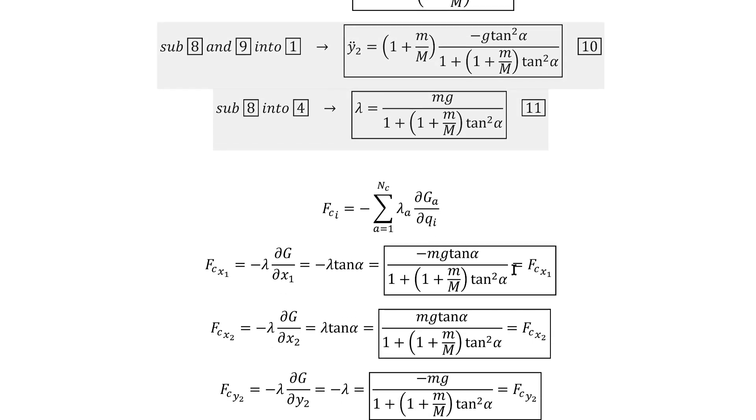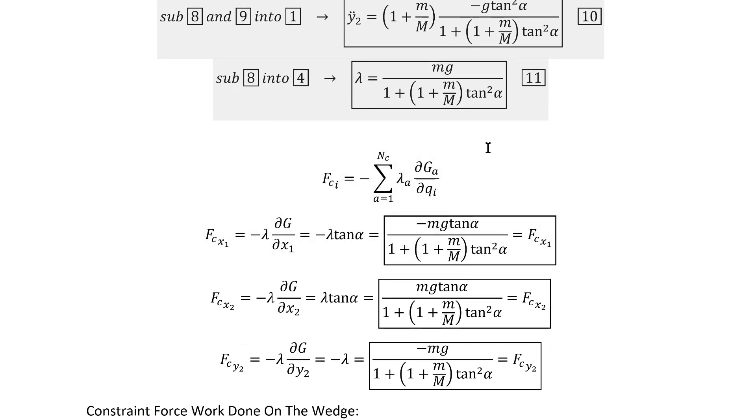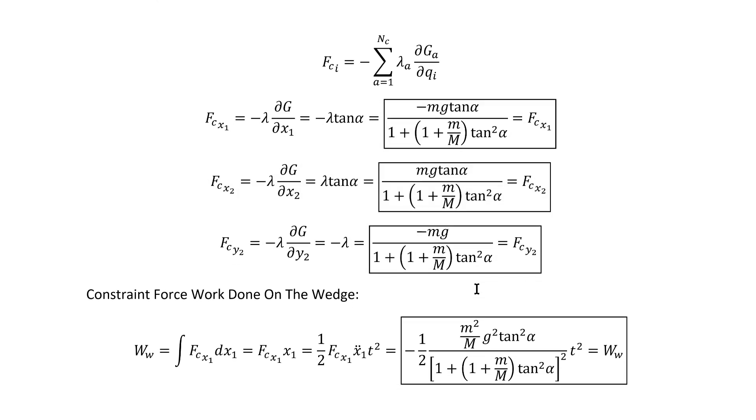From here, the next step is to calculate the constraint forces. As we know from the Lagrange multiplier technique, the constraint forces are given by this equation. It's pretty simple in our case because we only have one constraint and one Lagrange multiplier. We get these results out immediately, but we've already calculated lambda, so we can substitute them in to get more meaningful formulas. And with that, we're finally ready to calculate the constraint force work.